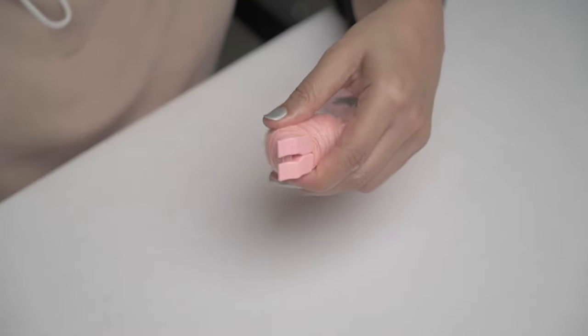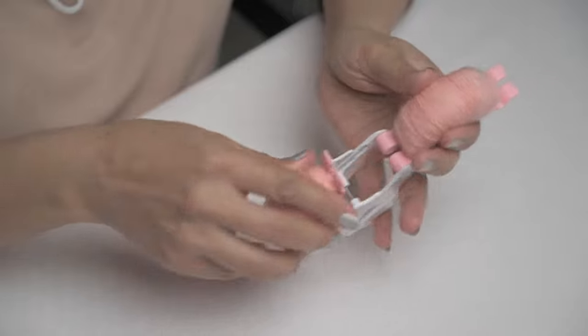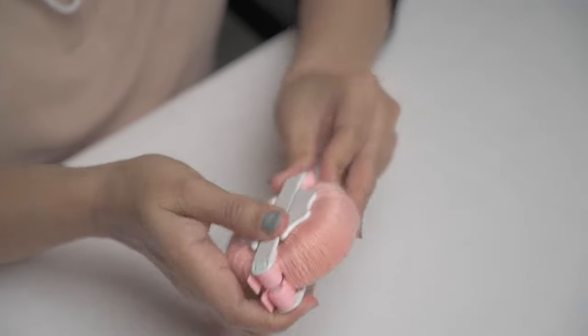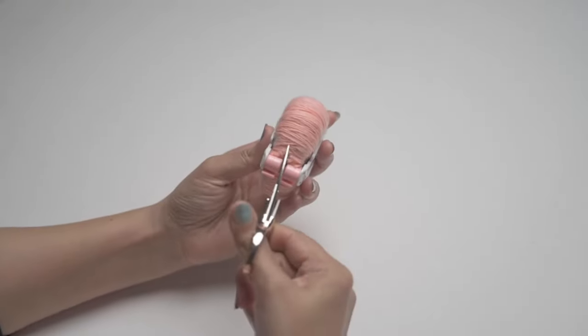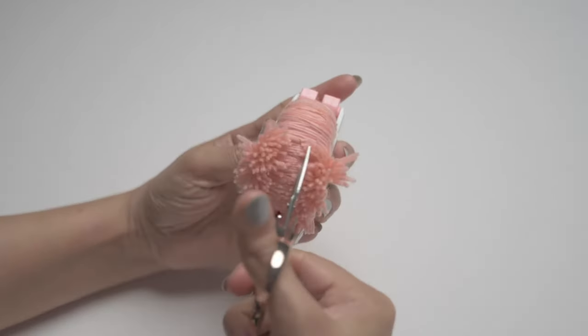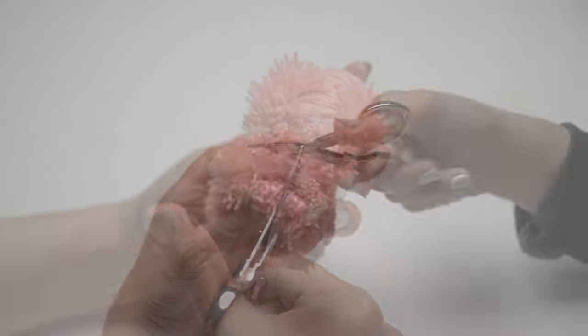After you've wrapped your yarn around each side, put the pom-pom maker back together and use sharp scissors to cut between the wrapped yarn and the groove in the pom-pom maker. The pom-pom maker will hold your yarn secure as you do this.